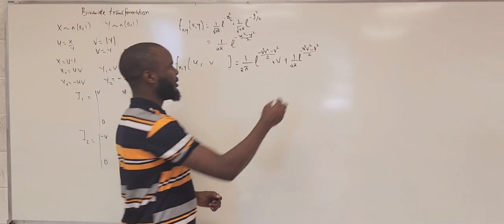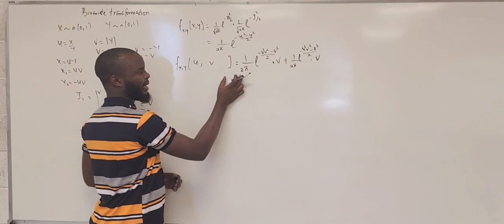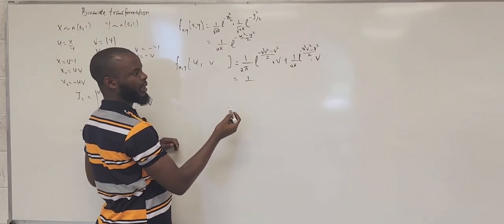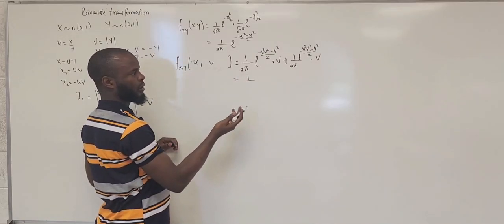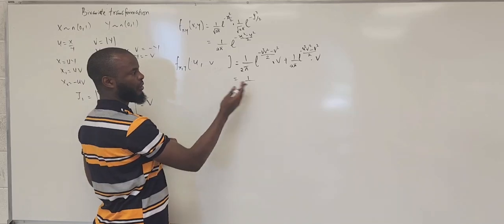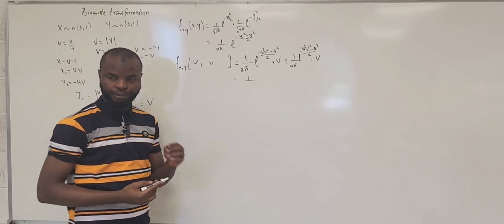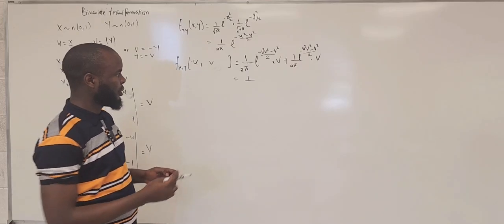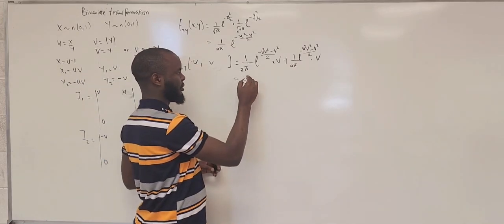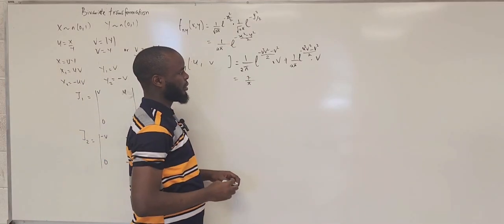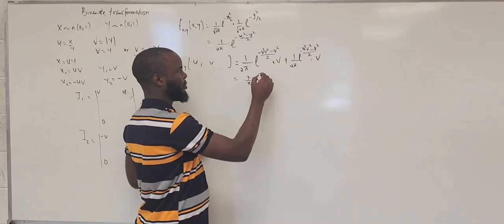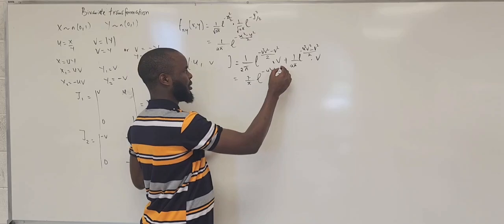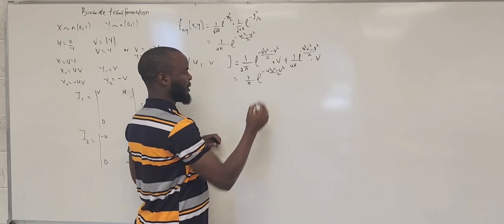Here we have v. So they are together — like half and half. So you should have one over pi plus one over pi, which is two over pi. Because if you have one over two pi plus one over two pi, you have one plus one which is two over two pi. So you have one over pi.